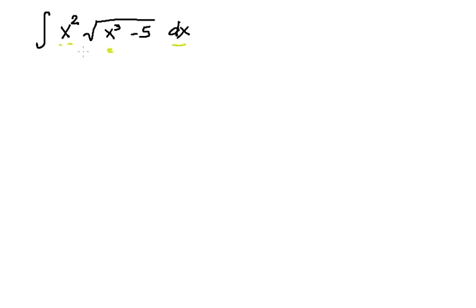When you have a complex problem like this, when you see a variable raised to something and you see another variable which is raised to n minus 1 of the other variable, then the change of variable may be applicable to this.